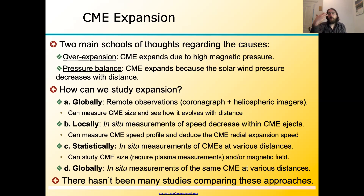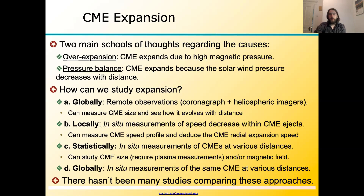How do we study this expansion? There are really four ways. We can do it globally with remote observations, which tell us about the CME size and evolution with distance. We can do it locally with measurements of the speed profile as it passes by a spacecraft. We can do it statistically with many measurements of various CMEs at different distances. And we can do it with conjunction studies — comparing the same CME being measured at two places. Ideally, all approaches should give the same picture of CME expansion.